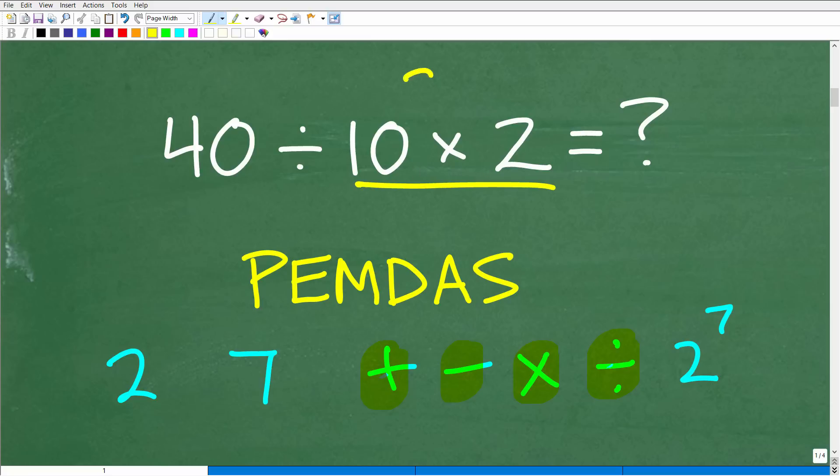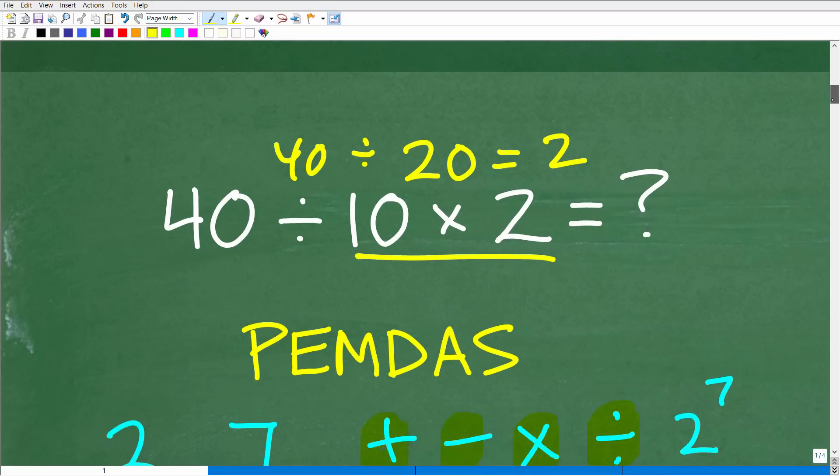Then I have 40 divided by 20. And that answer is 2, right? Which, of course, is one of the answers here. But this is wrong.